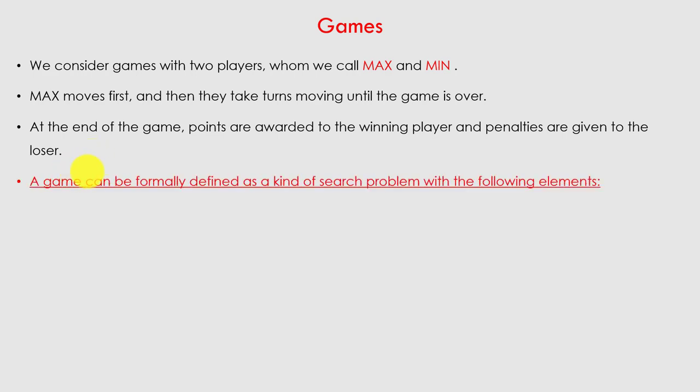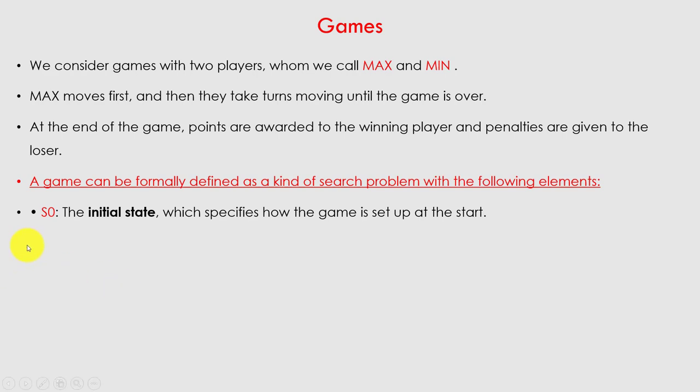A game can be formally defined as a kind of search problem with the following elements. First, the initial state, which specifies how the game is set up to start — this is given as input to the machine and is called S0.